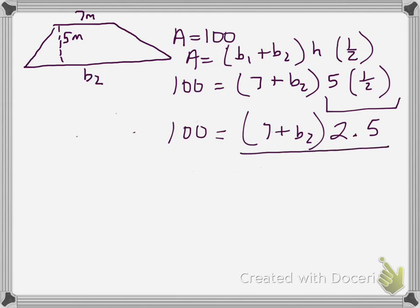So, if I do the opposite operation, if I divide by 2 and 5 tenths, then those are going to cancel. But, of course, I have to do the same thing to the other side. So, this is what I'm going to do. Now, over here, these 2 and 5 tenths will cancel. And that's going to leave me just this.